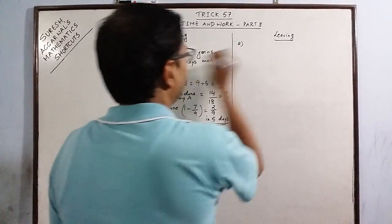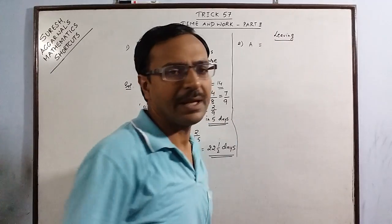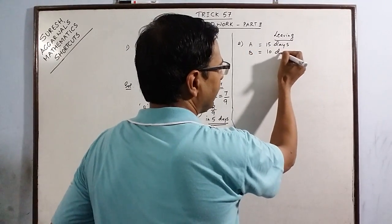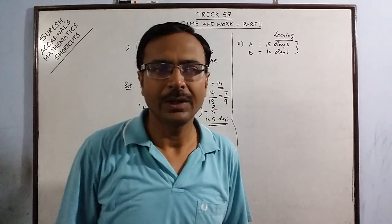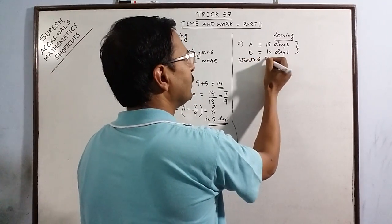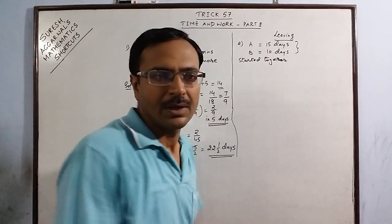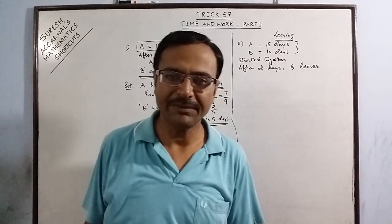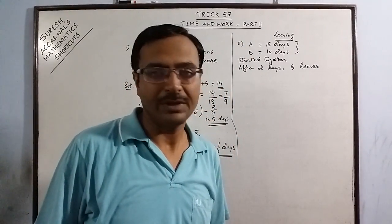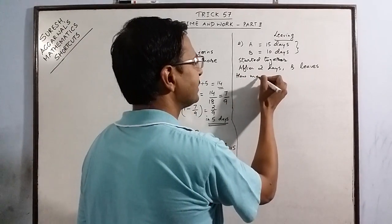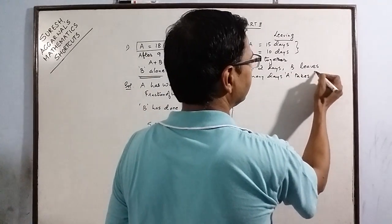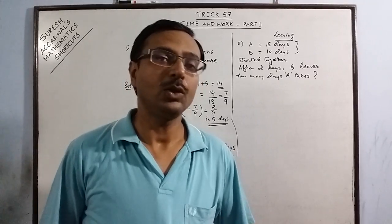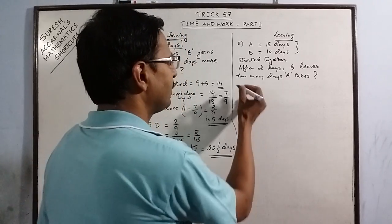Let us take a question to illustrate this concept. Person A can do a work alone in 15 days, and person B can do the same work alone in 10 days. They start working together, but after two days B leaves due to some circumstances. The question is: how many days does A take to complete the remaining work? The remaining work has to be completed by A alone.